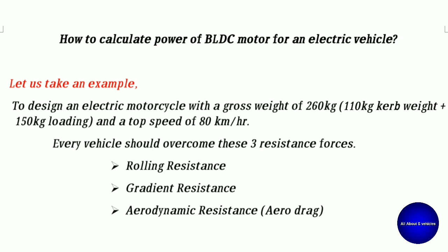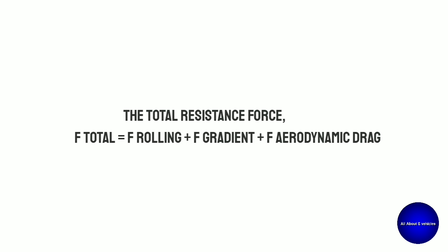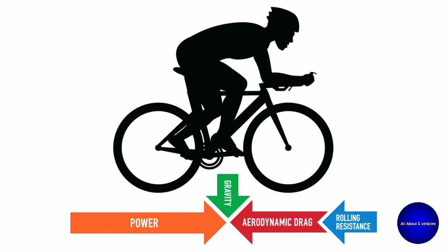Let us take an example to design an electric motorcycle with a gross weight of 260 kg and a top speed of 80 km/h. According to vehicle dynamics, every vehicle must overcome three resistant forces: rolling resistance, gradient resistance, and aerodynamic resistance. The total resistant force is the sum of these three.